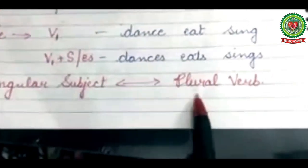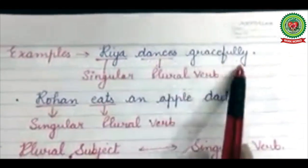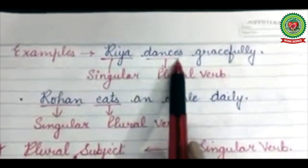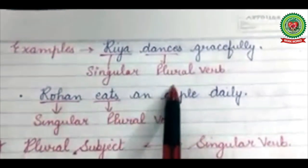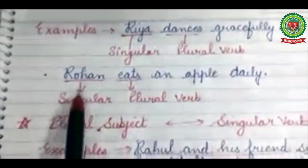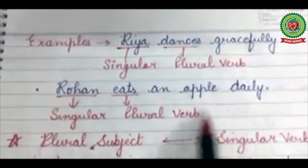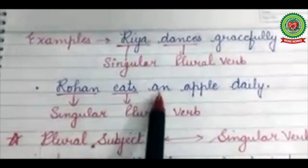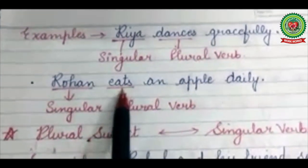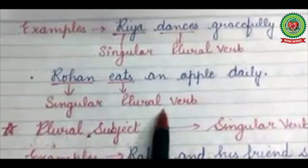The first rule is: if our subject is singular, our verb will be plural. For example, Rhea dances gracefully — Rhea is singular and 'dances' has ES with it, so it is a plural verb. Rohan eats an apple daily — Rohan is singular and 'eats' is a plural verb. So, singular subject takes a plural verb.